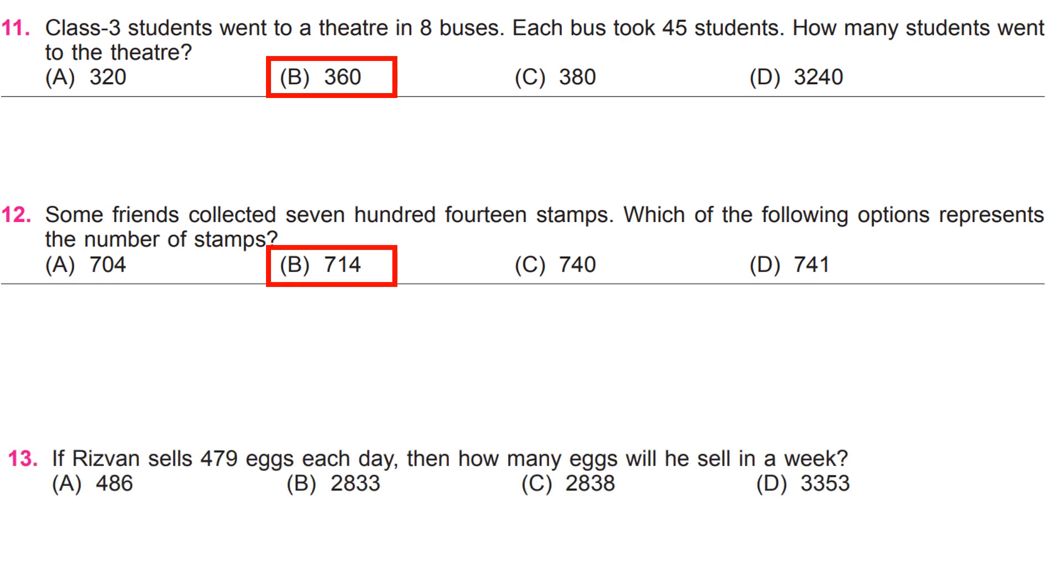If Rizwan sells 479 eggs each day, then how many eggs will he sell in a week? D, 3353.